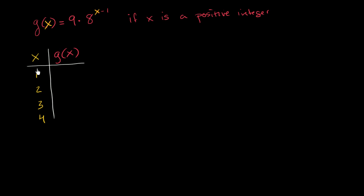So when x is equal to 1, g of x is 9 times 8 to the 1 minus 1 power, 9 times 8 to the 0 power, or 9 times 1. So g of x is going to be just 9.